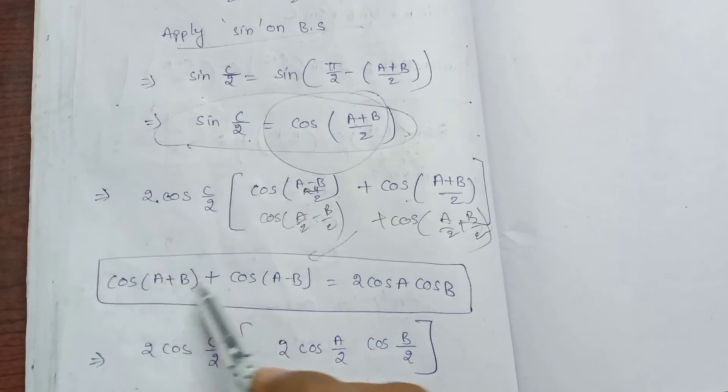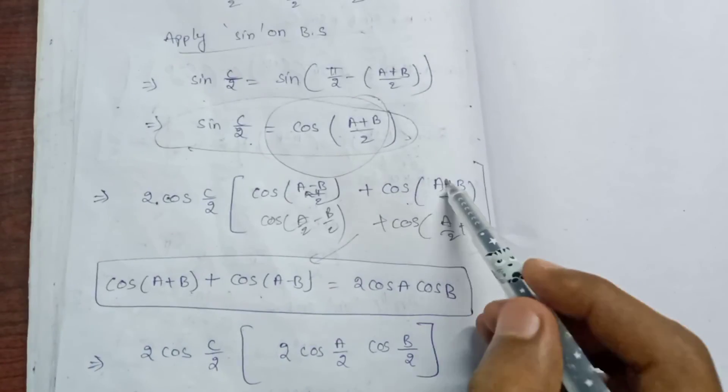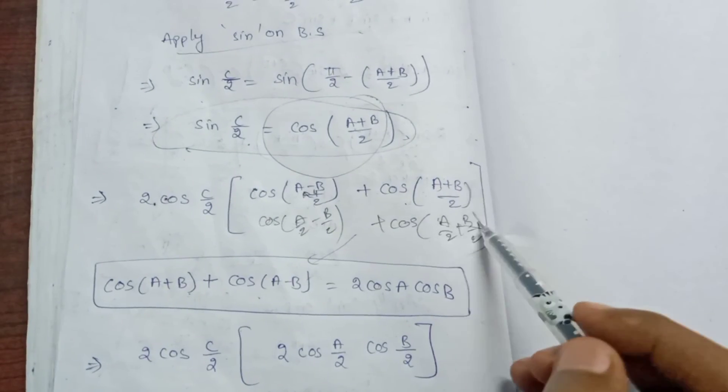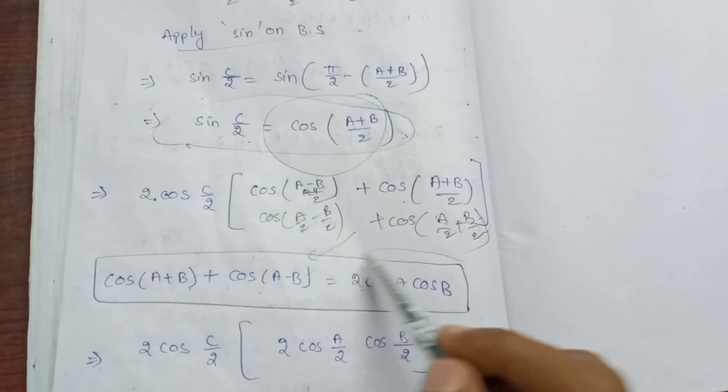Applying the product-to-sum formula: cos((A-B)/2) plus cos((A+B)/2) equals 2·cos(A/2)·cos(B/2).